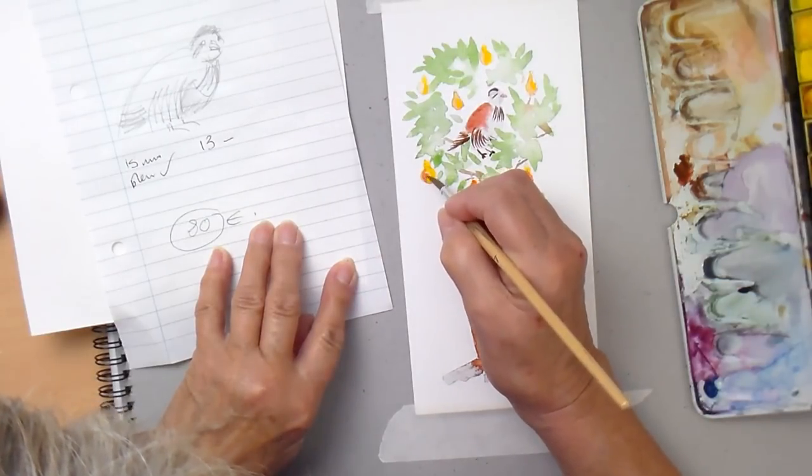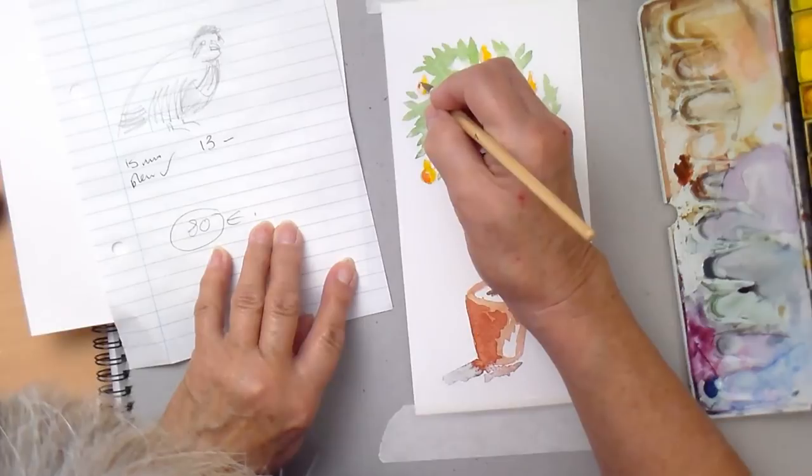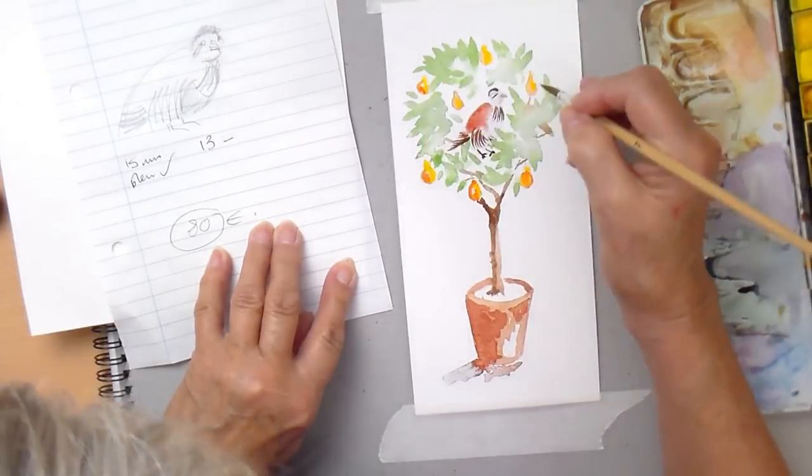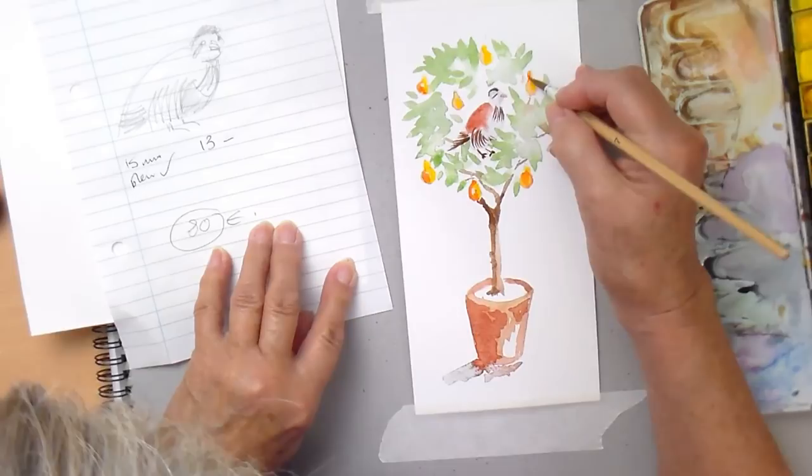Just to make it a bit more shaped. So hopefully people will realize that these are pears on a pear tree and a partridge in a pear tree.